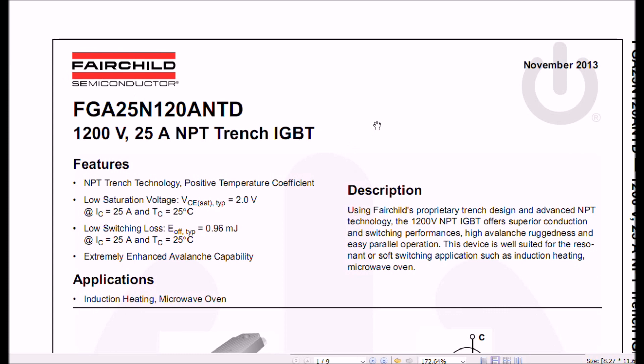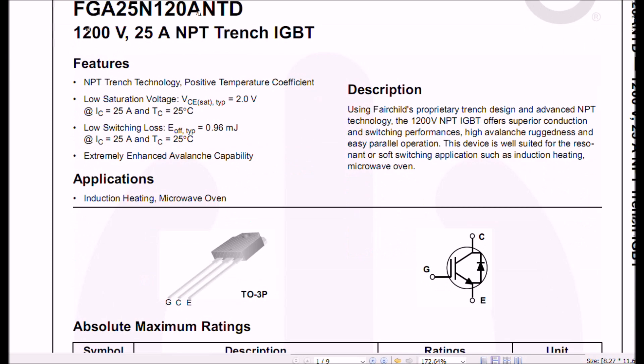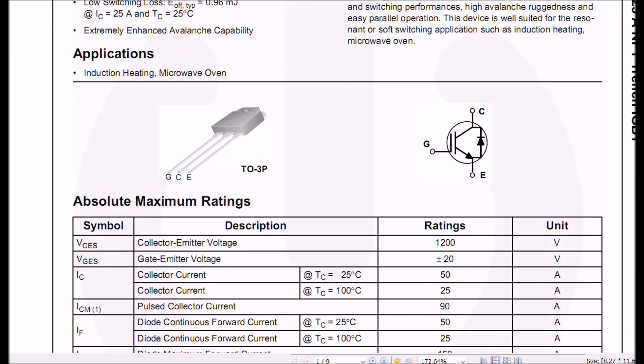Let's look at a more modern version. This is the FGA25N120. If you notice right here in the spec sheet, the VCE SAT is 2 volts. So that's an improvement. Here is the case style. Here is the symbol. These do have an internal damper or flywheel diode or whatever you want to call it. All the modern ones I've found do.